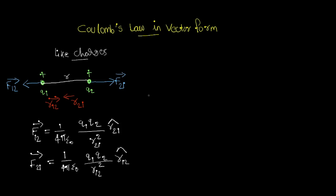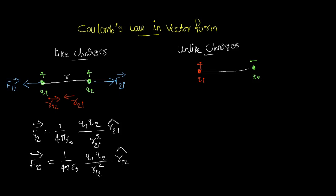Next, we are considering two unlike charges. For example, here we are considering one positive charge and one negative charge. Q1 is a positive charge and Q2 is a negative charge. We already know that these are different charges, so an attractive force is generated between them because Q1 and Q2 are unlike charges.